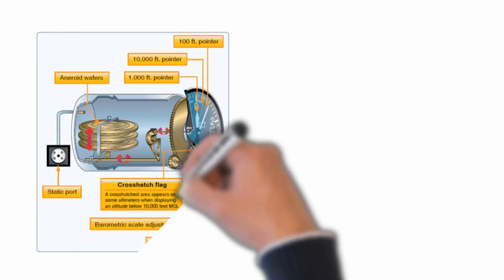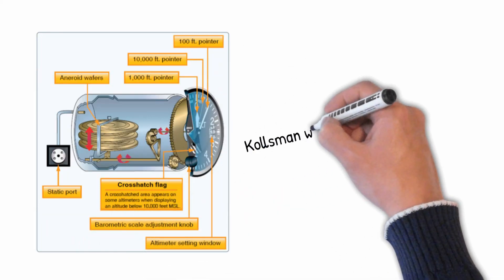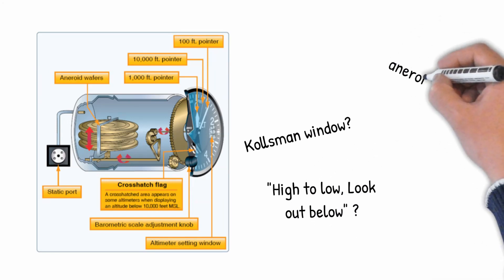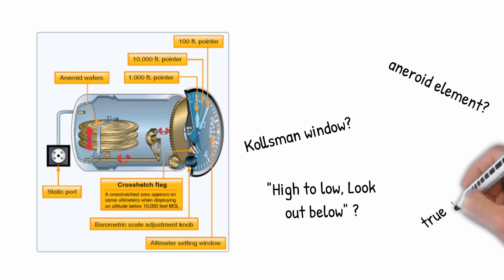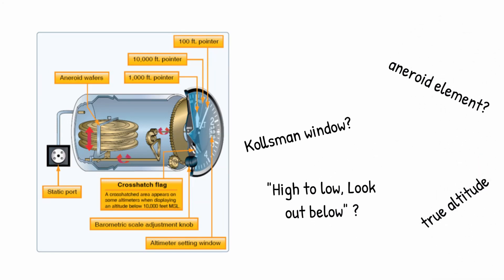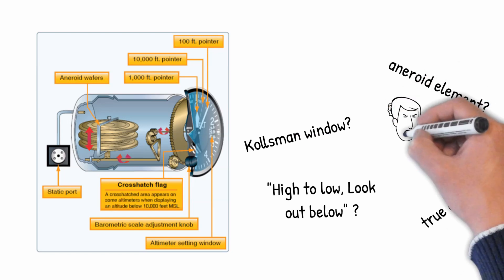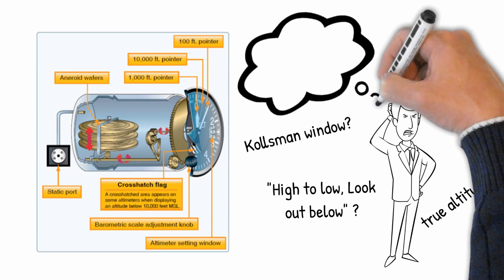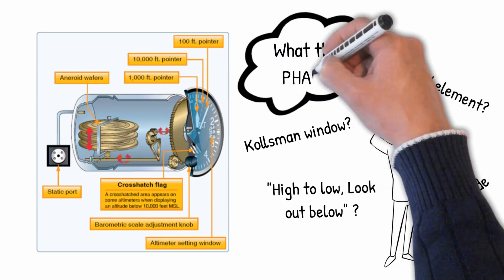Right here is a very informative diagram of an altimeter from the Pilot's Handbook of Aeronautical Knowledge. And admit it, we've all been there before — we're sitting with an instructor or a DPE and they begin to ask systems questions. And we're quietly praying they don't ask us about the pitot-static system, because then you'd have to pull out a bunch of terms like Kollsman window, aneroid element, true altitude, absolute altitude, high to low look out below. Well, how about when you're reading about altimeter errors and you think, what the?